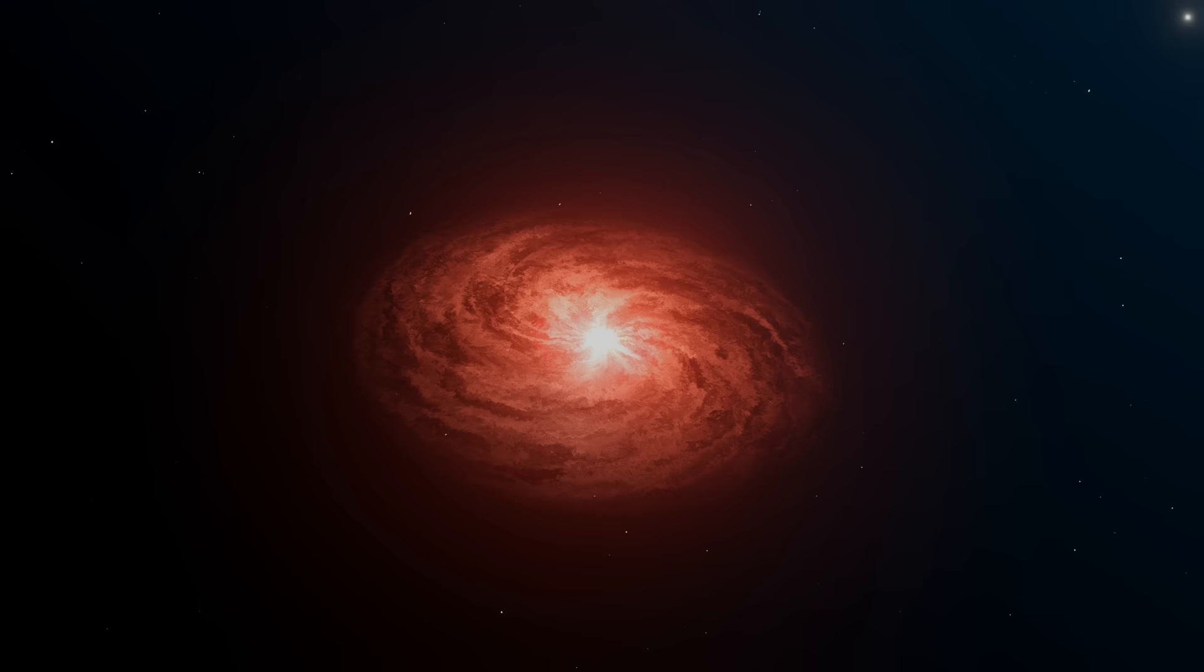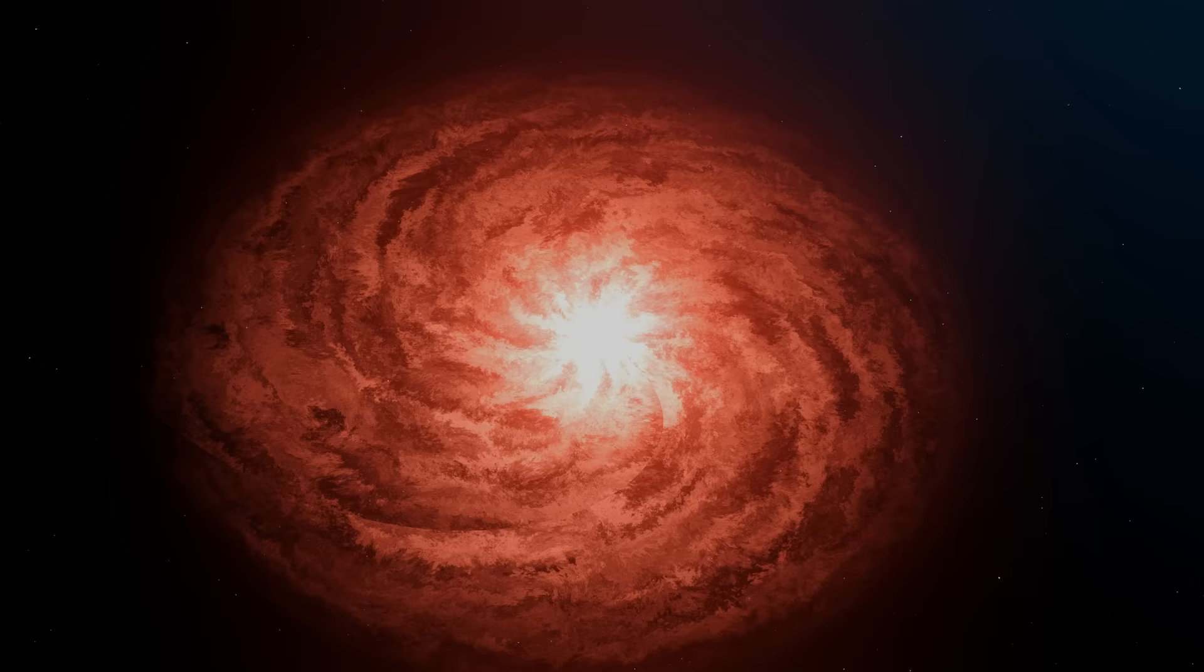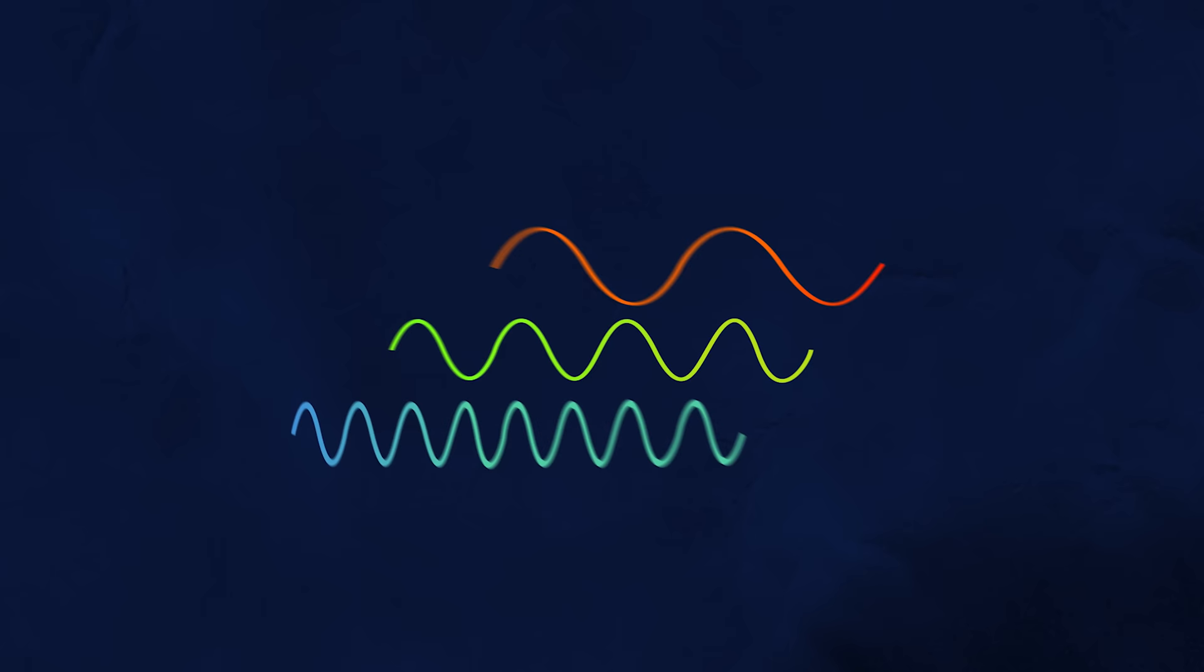But how could we possibly measure this distance? The answer lies within the color of the galaxy. All of the light we see is just a small fraction of the light that actually exists. Every form of light can be thought of as a wave, and the length of that wave can be smaller or longer. This is what determines the colors that we see.